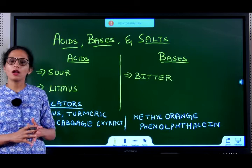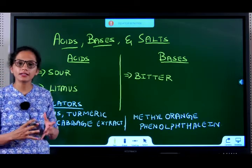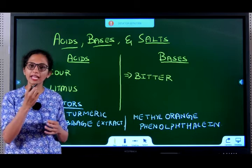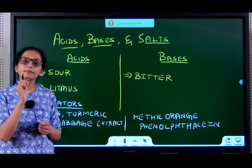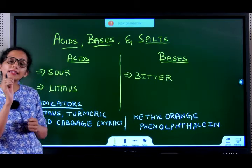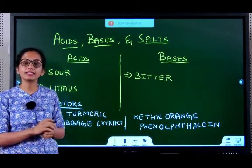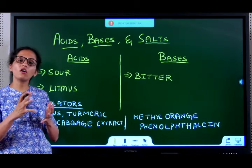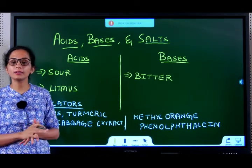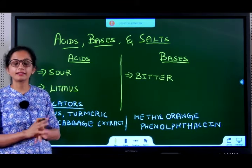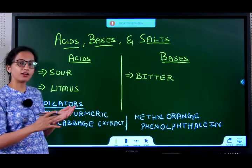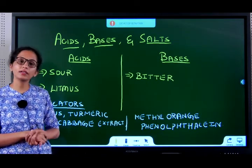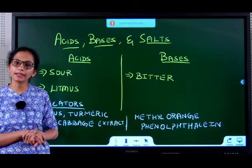There are a lot of substances around us — a lot of food items and different things. When you taste some things, they taste sour, and some things taste bitter. We have already learnt in our previous classes that things that taste sour are usually acidic and things that taste bitter are usually basic.